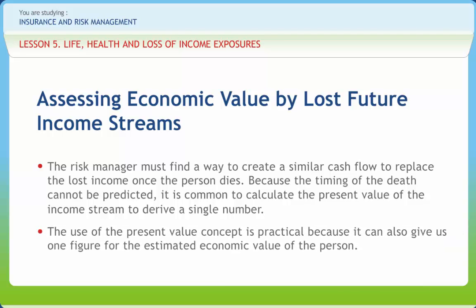Because the timing of death cannot be predicted, it is common to calculate the present value of the income stream to derive a single number. The use of the present value concept is practical because it gives us one figure for the estimated economic value of the person. The purpose is to get an idea of the order of magnitude of the value of the lost income stream and gain insights concerning the needs of a typical person. The present value of a future stream of earnings is affected by interest rates and by time, and an income level does not remain constant over long periods.